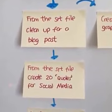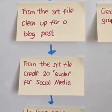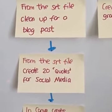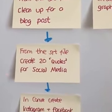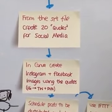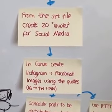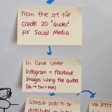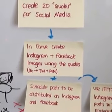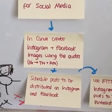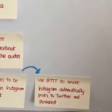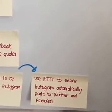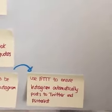From that same SRT file downloaded from YouTube, you can pull out 20 quotes — you can do more if you want, but 20 quotes from a 15-minute video should be quite easy. With those quotes you create graphics in Canva, then upload those to Instagram and Facebook and schedule them to be distributed across platforms. I would use ifthisthenthat.com to ensure that Instagram posts are automatically shared on Twitter and Pinterest.